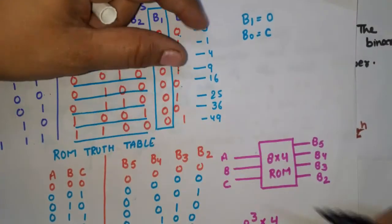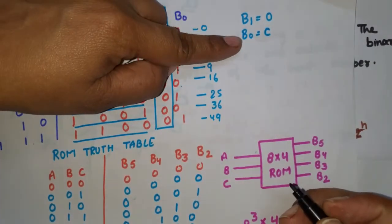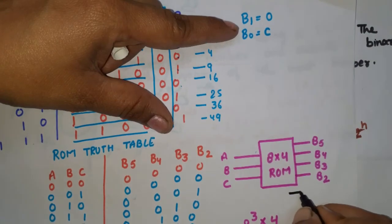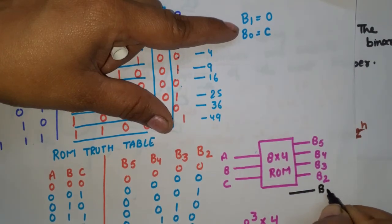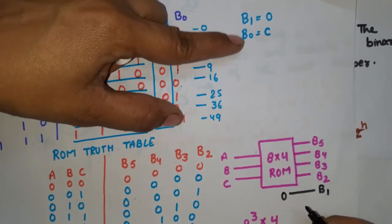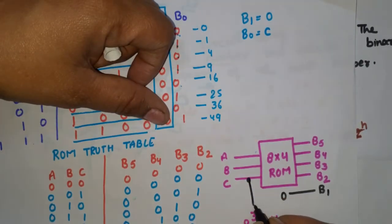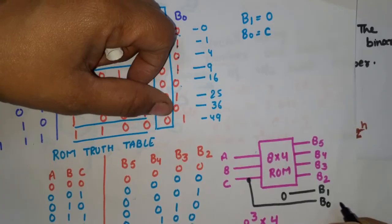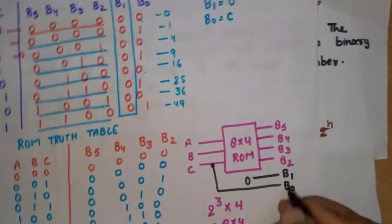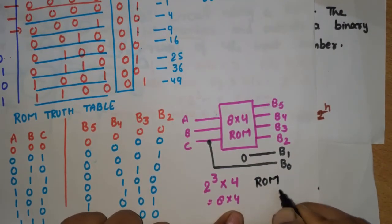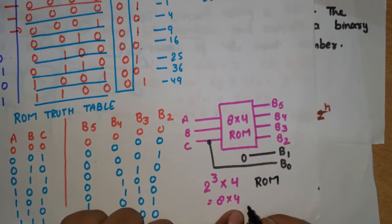The 4 ROM outputs are b5, b4, b3, b2. For b1, which is always 0, it is connected to 0 directly. For b0, since b0 equals C, we take C and connect it to b0. This completes the ROM block diagram implementation.